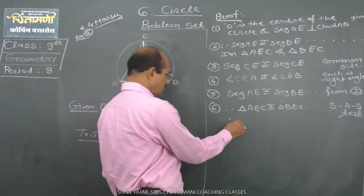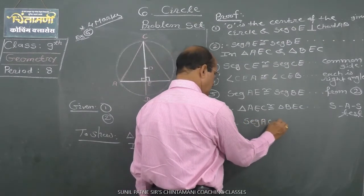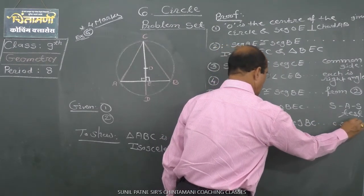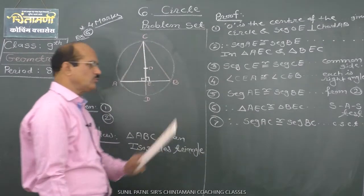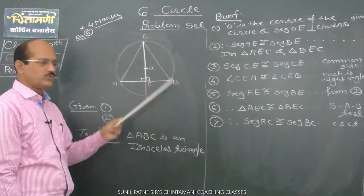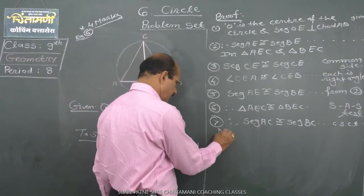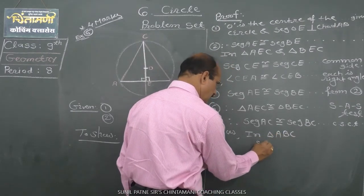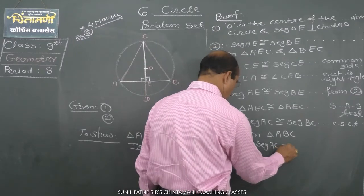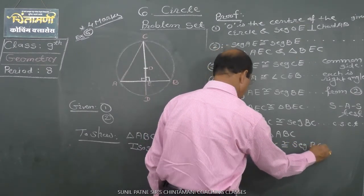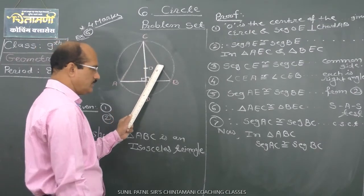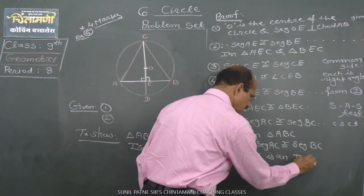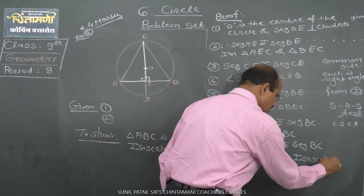Segment AC is congruent with segment BC, as corresponding sides of congruent triangles. Now, in triangle ABC, since segment AC is congruent with segment BC, triangle ABC is an isosceles triangle.